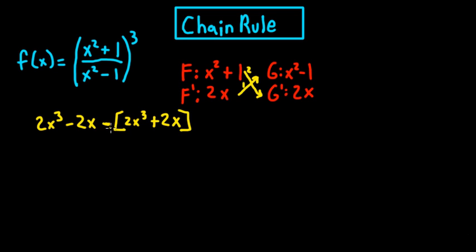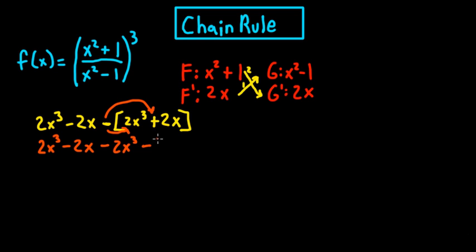Now we're going to rewrite this, and it's going to look like: minus 2x cubed minus 2x. So that's going to be minus minus 2x cubed, and this is also going to be minus minus 2x. So this is going to cancel out, and the only thing you're going to be left with is negative 4x.